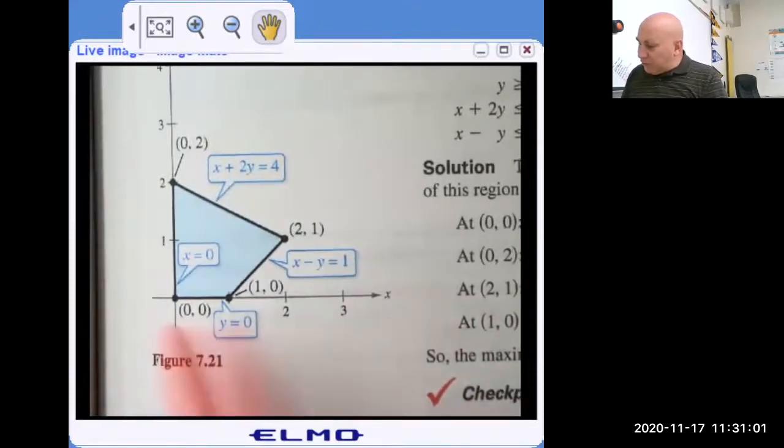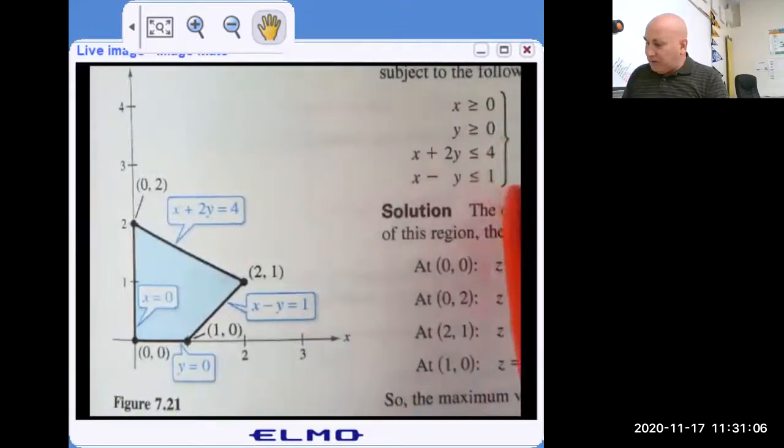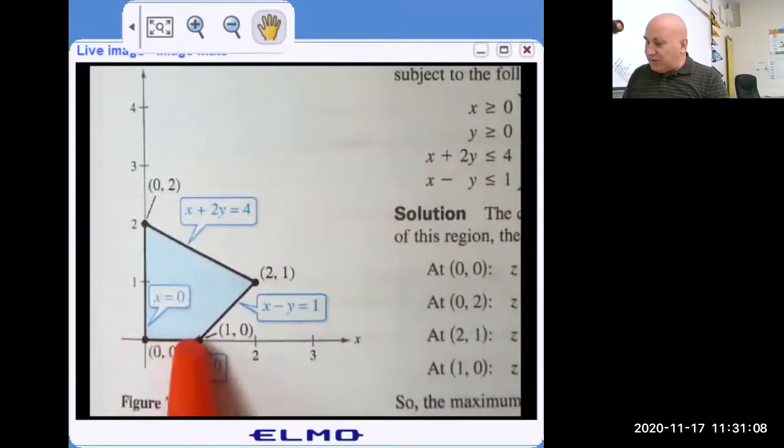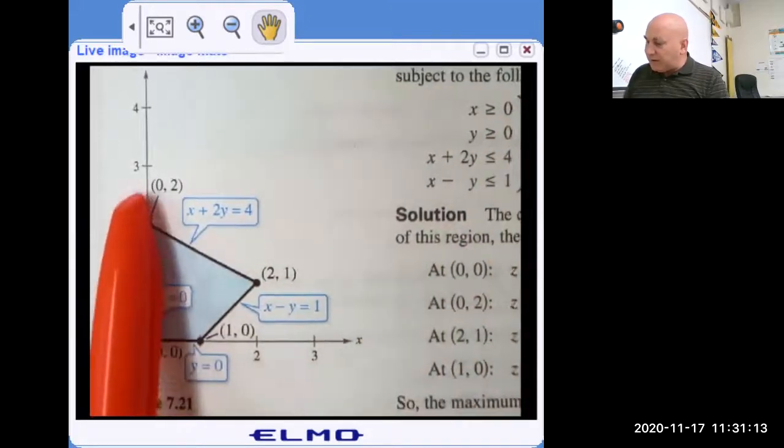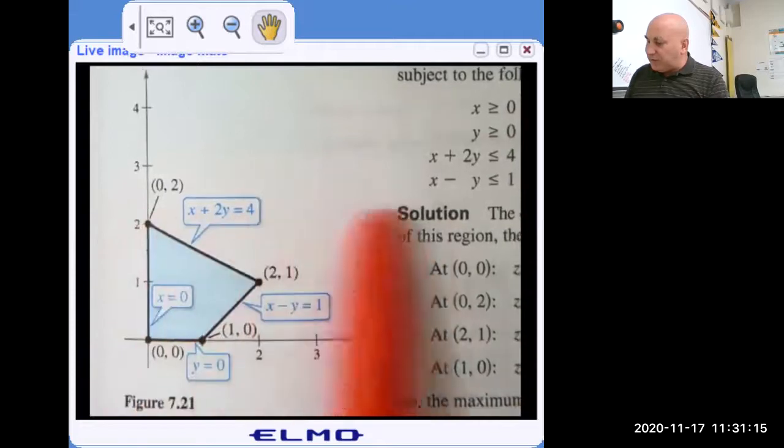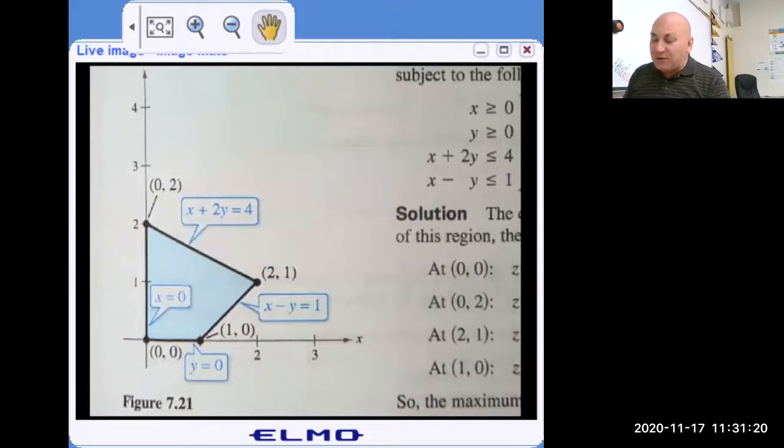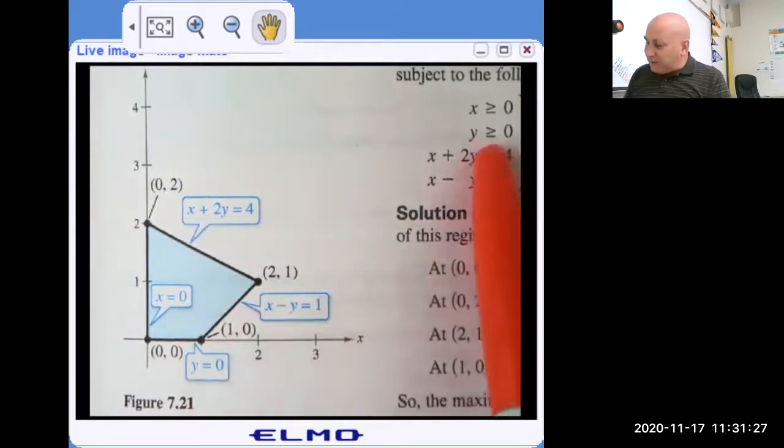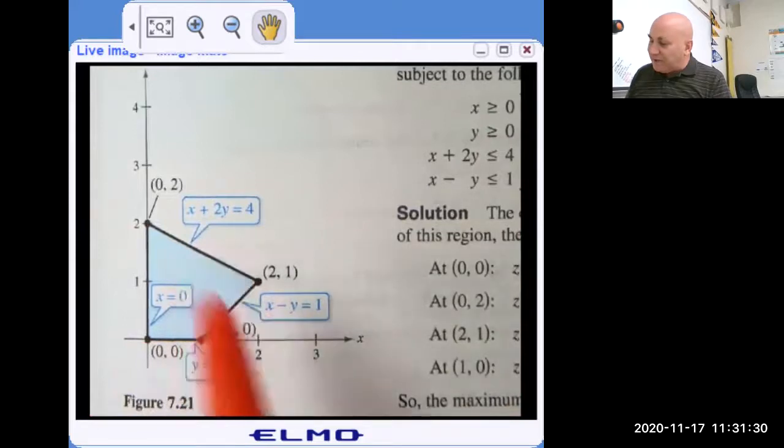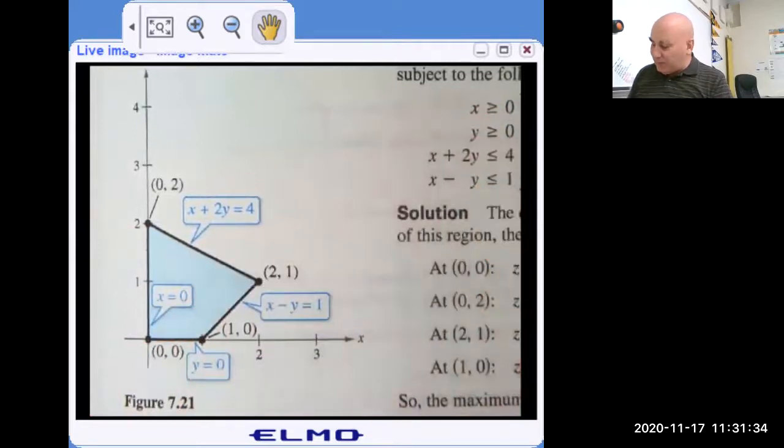Here's another one where we've graphed some constraints. So here are the constraints. Here is the feasible region. So X is greater than or equal to zero. Here's X equal to zero and we shade everything to the right of it. Remember, I just drew little arrows so we don't have four different types of shading going on. Y is greater than or equal to zero. Here's Y equal to zero and we're going to shade above it. Anywhere in here satisfies all four of these constraints.